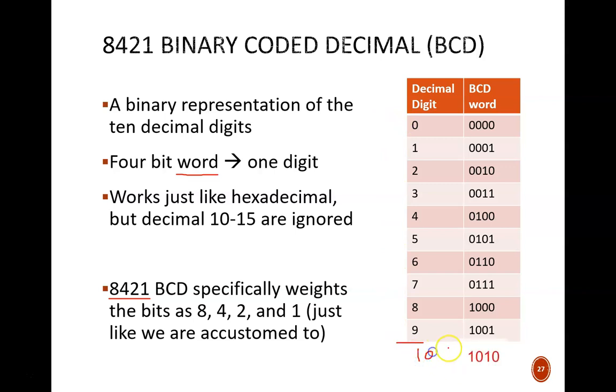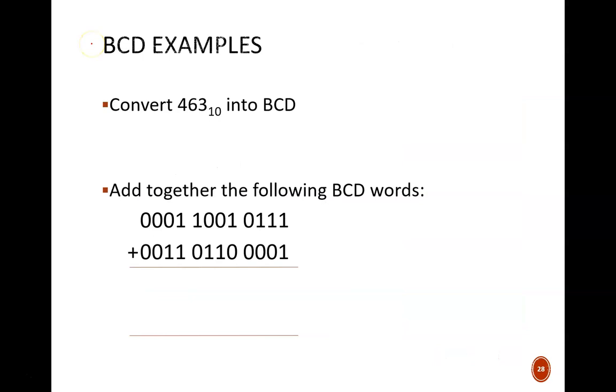The binary code 1010 would never be used. Why? Because 10 cannot be represented with a single digit in decimal. Similarly, the codes for decimal 11 through 15 are invalid. This all makes more sense with an example.